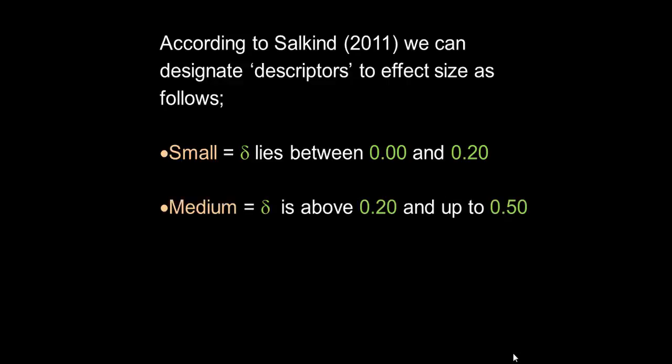In order to allow us to use descriptors to compare different effect sizes, Salkind has suggested that for any values of effect size delta lying between 0 and 0.2 we regard as small, any value of delta above 0.2 and up to 0.5 would be described as medium, and any value of delta above 0.5 would be described as large. And that allows us to give a context to these bland decimal numbers.